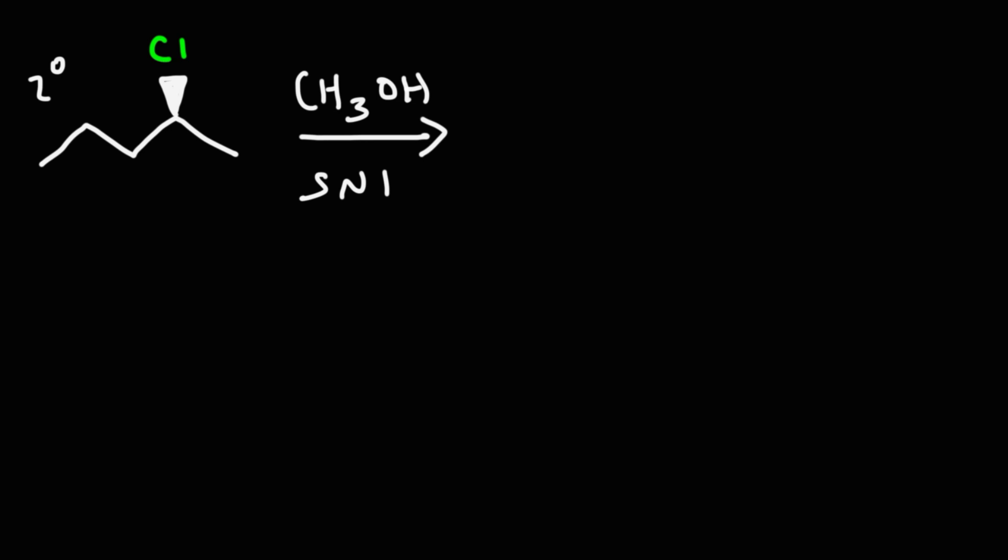Now in the SN1 reaction you're going to get a racemic mixture. The end result is that we're going to get an ether, so we're going to replace the chlorine atom with the OCH3 group. The hydrogen is going to leave, so we're going to get both the retention product and also the inverted product. This is the retention product because it retained the stereochemistry at the chiral center, and this is the inverted product. Here the configuration at the chiral center is S, it's S here as well, but here it's R. So that's why this is the inverted product.